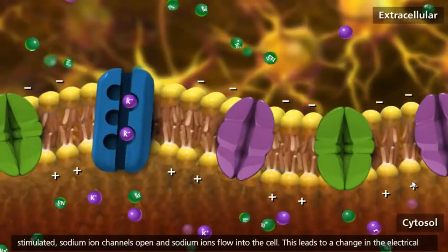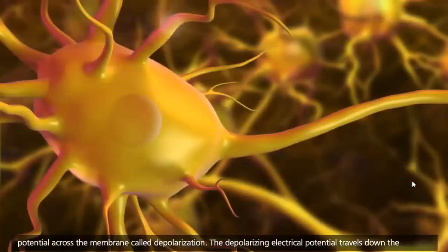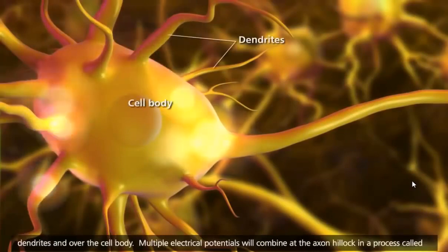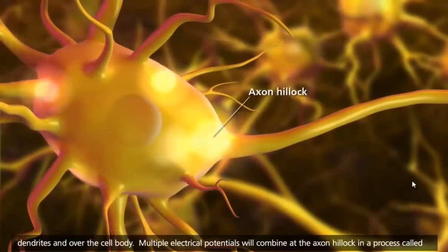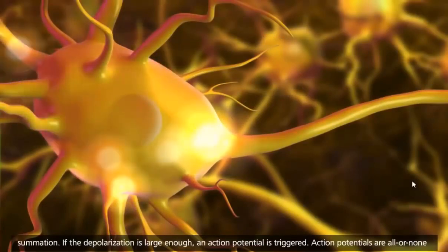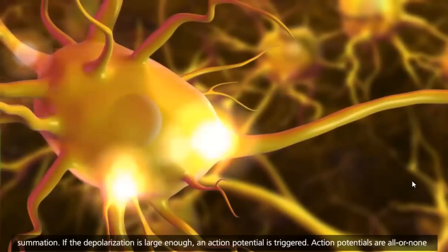This leads to a change in the electrical potential across the membrane called depolarization. The depolarizing electrical potential travels down the dendrites and over the cell body. Multiple electrical potentials will combine at the axon hillock in a process called summation. If the depolarization is large enough, an action potential is triggered.